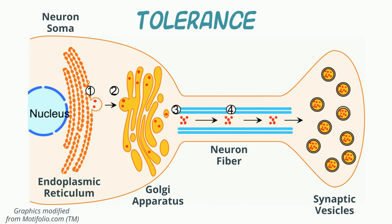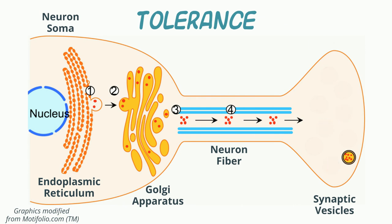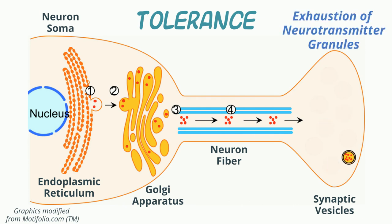A third mechanism for reduction of a drug's effect is the reduction of signal transduction mediators or the amounts of the signal itself, like a neurotransmitter. For example, the adrenergic agent amphetamine leads to the release of synaptic catecholamines. Chronic administration may lead to the eventual depletion of catecholamine stores and a reduction of the potential signal that they can bring.